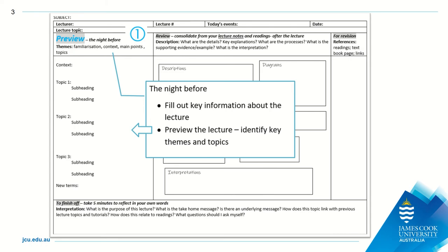The method uses a template that you can download from the Learning Centre and has four steps. Step 1: prior to each lecture, preferably the day before, fill out the key information about the lecture at the top of the template, including a mental jog reminder for the day. This will help you with recall of the lecture at the end of semester. Then preview the lecture by viewing the lecture slides or other material that should be available on your LearnJCU subject site 24 hours before the lecture time.